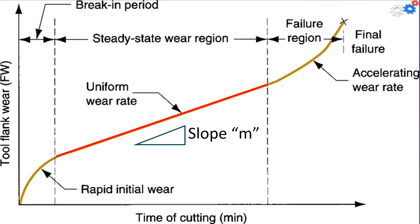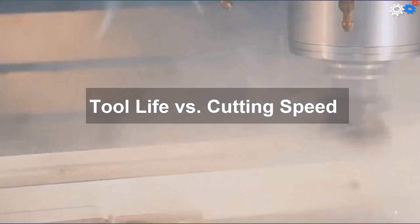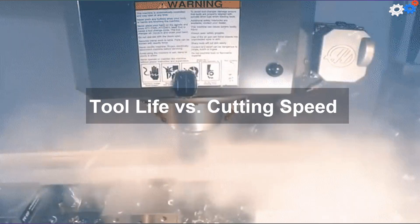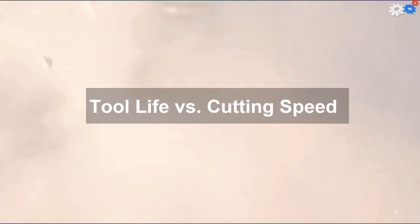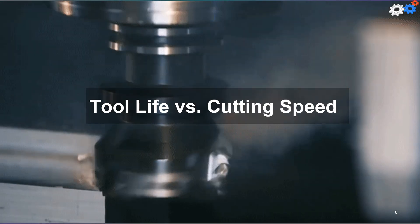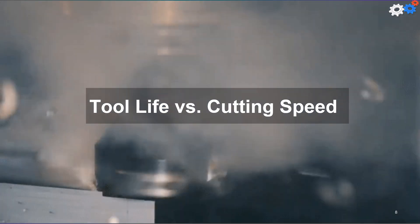The slope of the tool wear curve in the steady-state region is affected by the work material and cutting conditions. Harder work materials cause the wear rate — the slope of the wear curve — to increase. Increased speed, feed, and depth of cut have similar effects, with speed being the most important of the three.